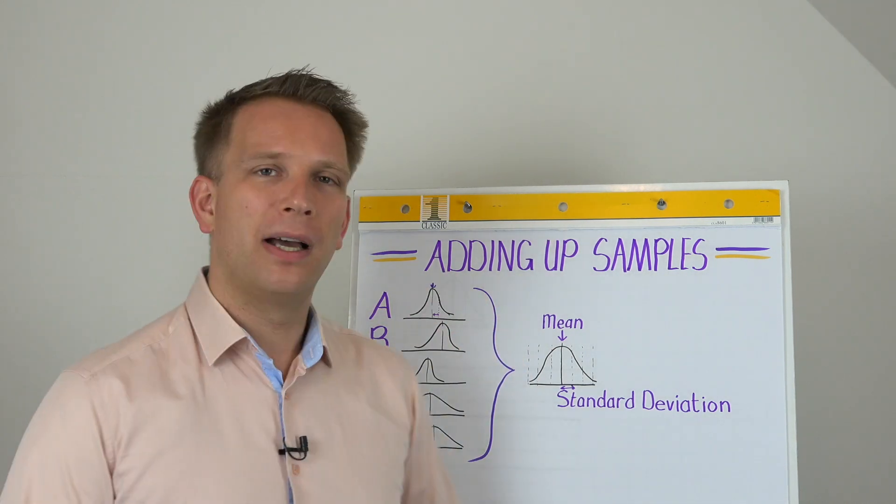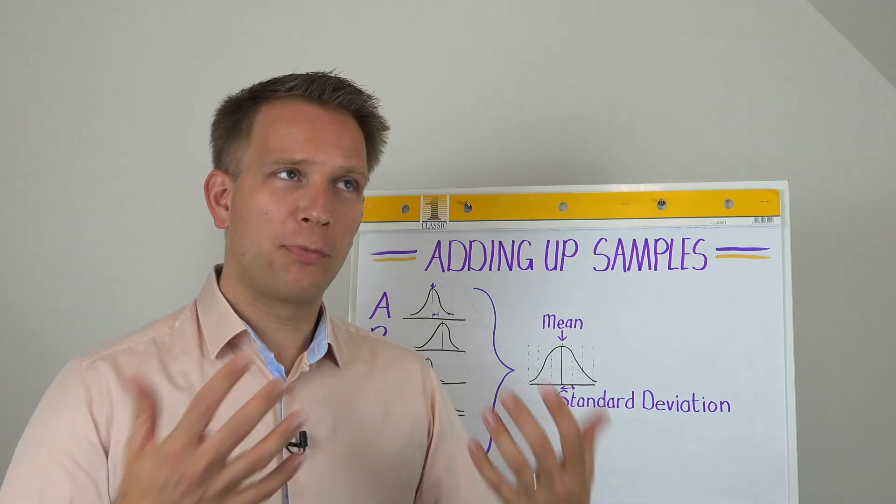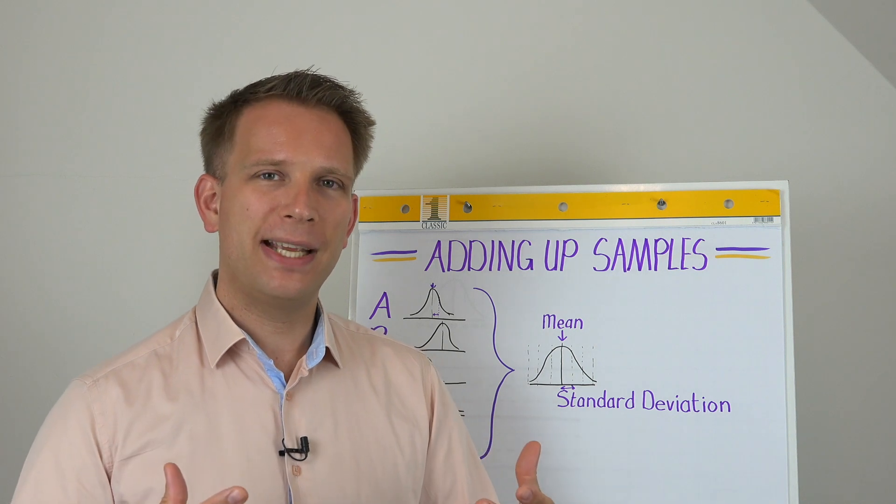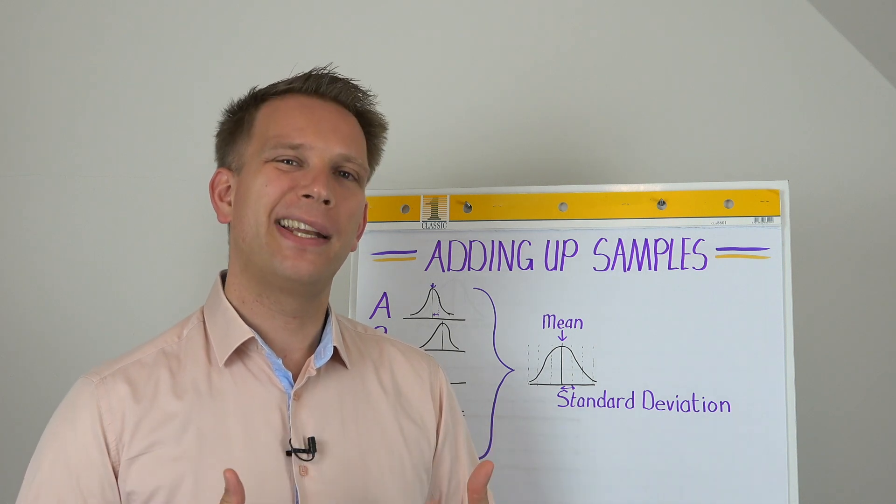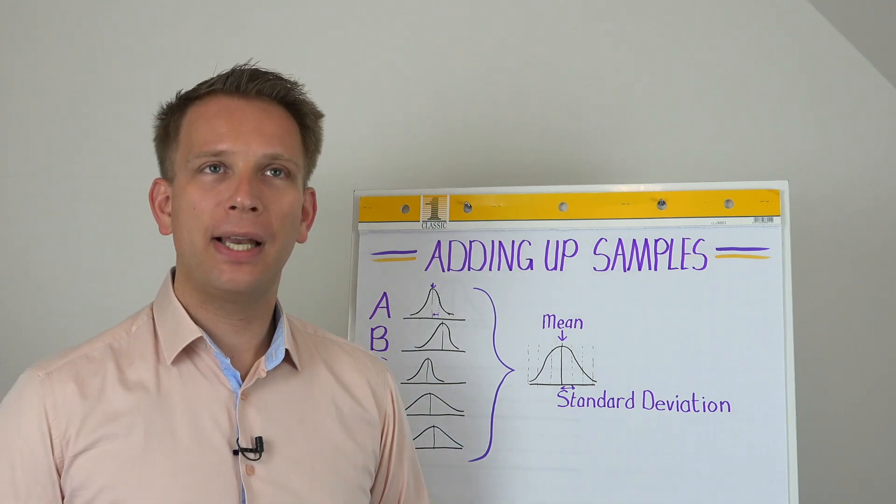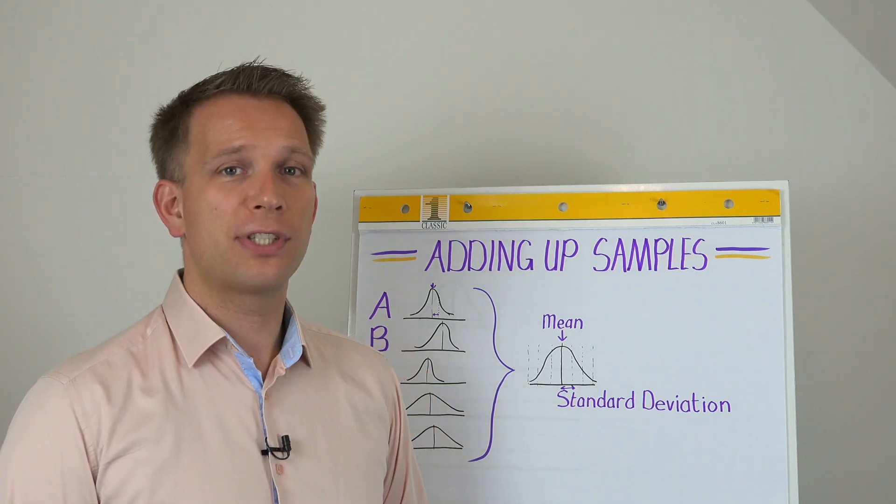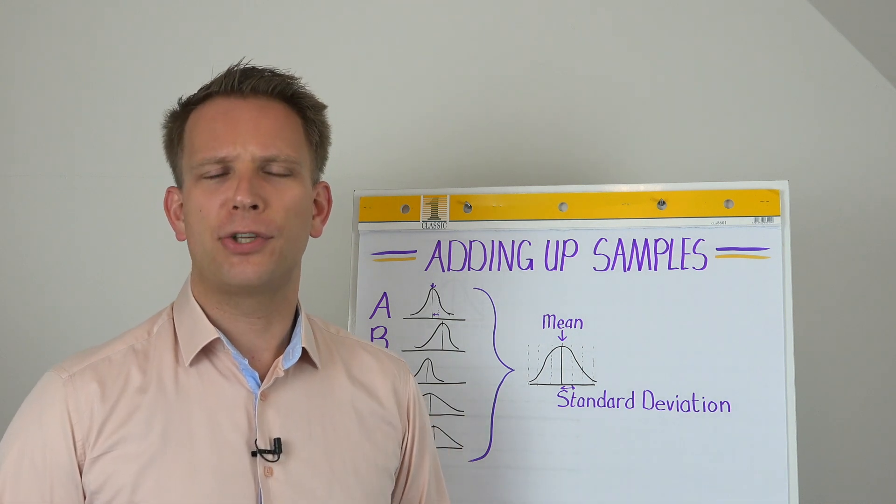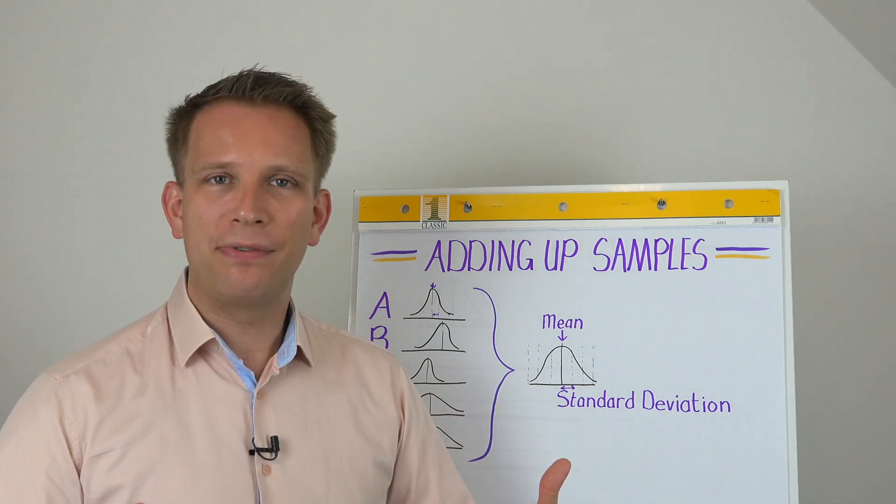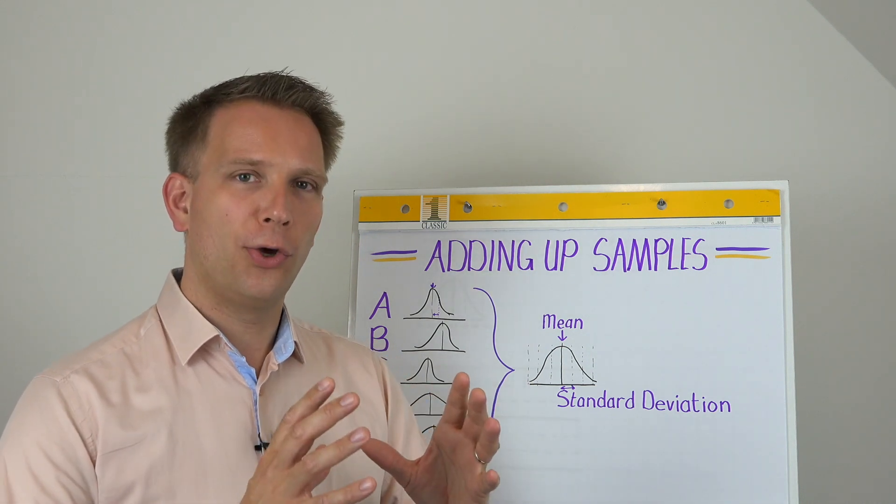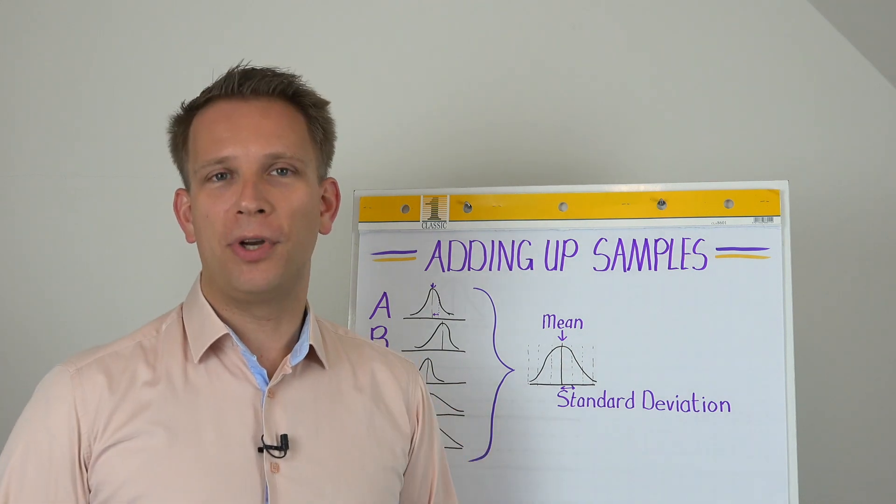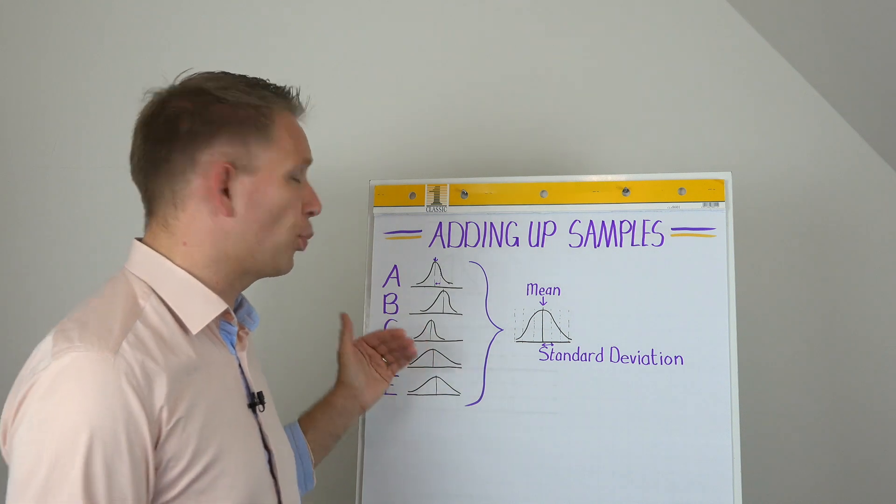And that is when we have a number of samples that come from one big production, or they are the same product, but they ran in different days, and you would like to combine the data. So you have all of these samples, they each are fully calculated, you do not have the original sample data anymore, but you do have the descriptive statistics. So that means you have the average, the mean, you have the standard deviation or spread, and you would like to know what are the same values, but then for my total production. Now there are different reasons why you might want to do this.